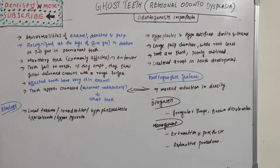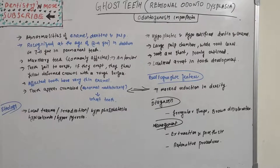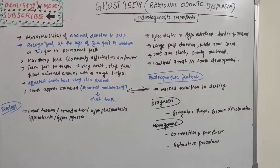The ghost teeth — regional odontodysplasia — involves abnormal enamel, dentine, and pulp formation, especially in the maxillary anterior teeth, including the central incisor, lateral incisor, and canines. It can be seen in both deciduous and permanent dentition.